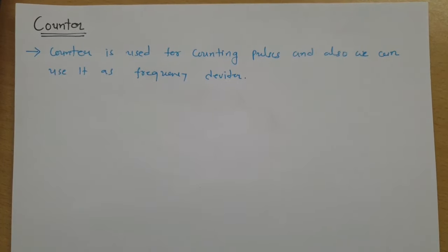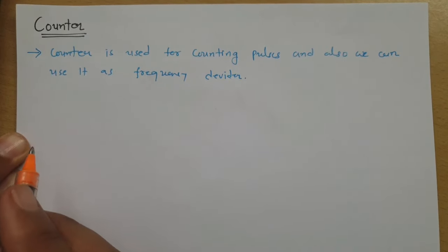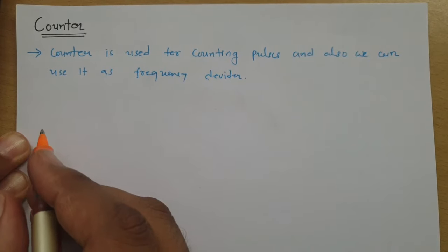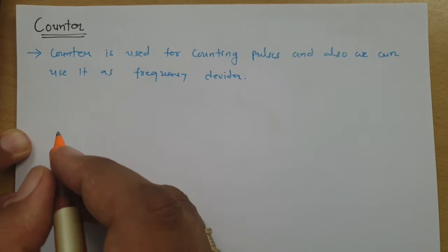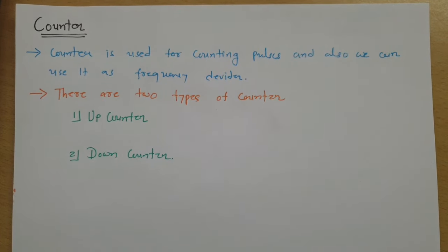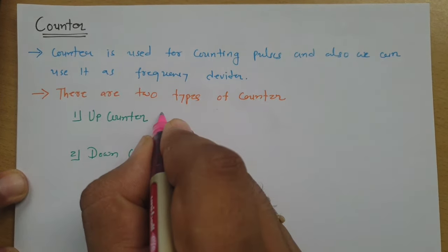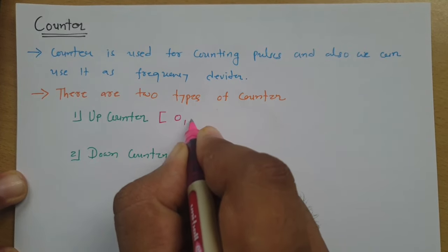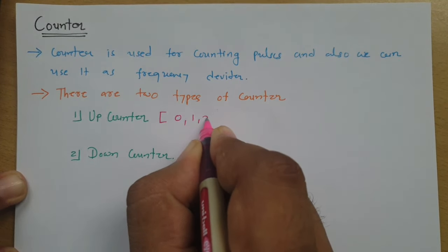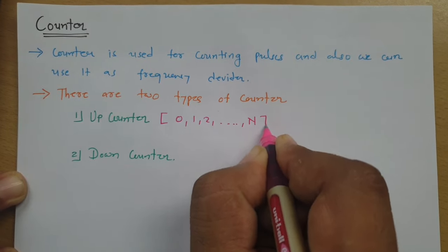When we talk about counters, there are basically two types: one is an up counter and the second is a down counter. In an up counter, we start our count from 0 and we can count up to n — so the up counter will count 0, 1, 2, 3, and it can count up to n.